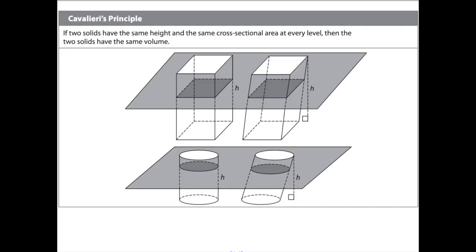It gets better because cones also follow Cavalieri's principle. Cavalieri's principle says that if two solids have the same height and the same cross-sectional area at every level — meaning if you cut any plane through the shape, the areas are always the same — then those solids have the same volume. So oblique cones have the exact same volume as regular cones.